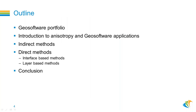Today's outline is that I'm talking about the anisotropic tools we provide to study azimuthal seismic data, to investigate anisotropy and possibly extract fracture locations. I will talk about the GeoSoftware portfolio, an introduction to anisotropy, the GeoSoftware applications we provide, and within those applications we have different methods — indirect methods, direct methods — and finally the conclusion.